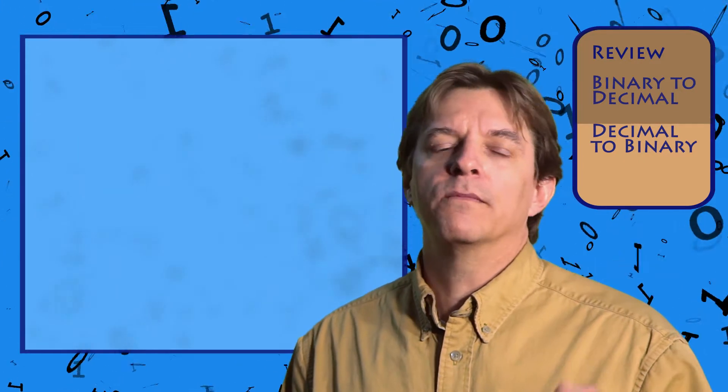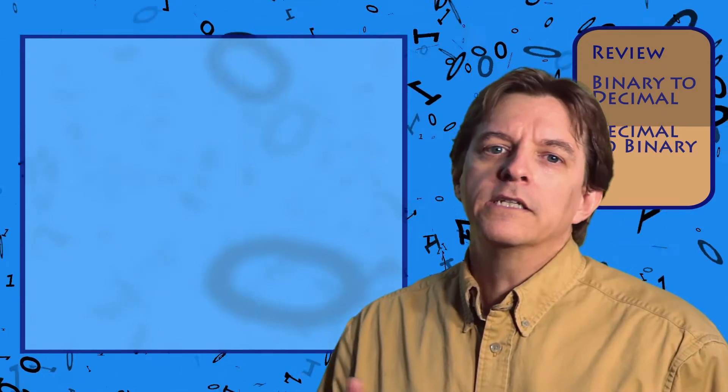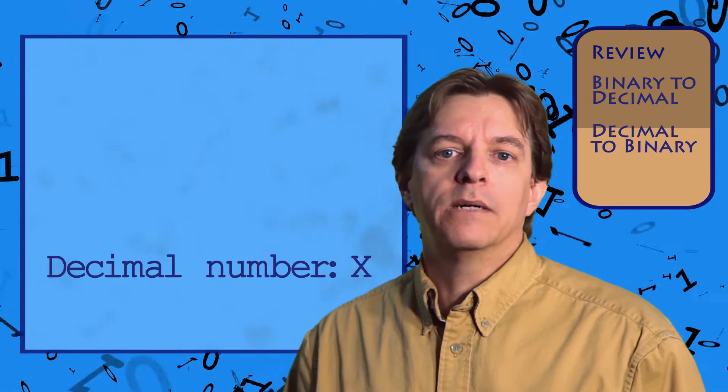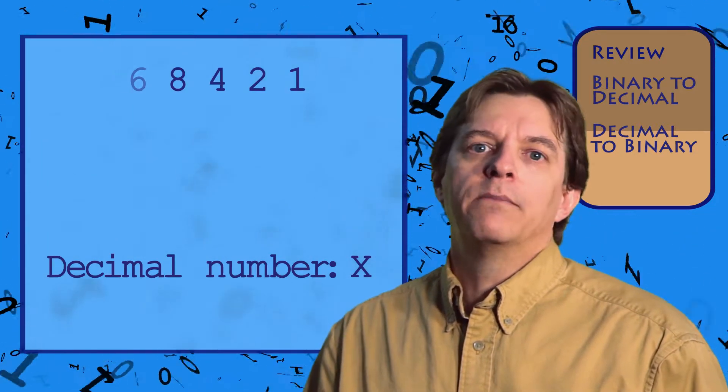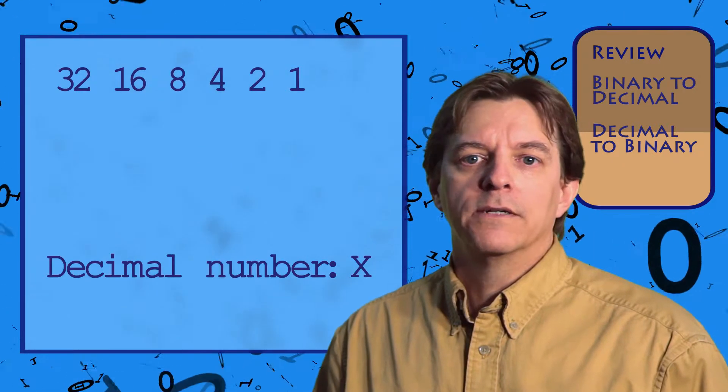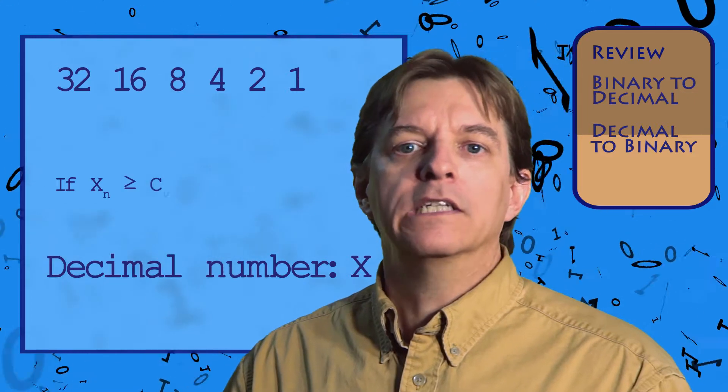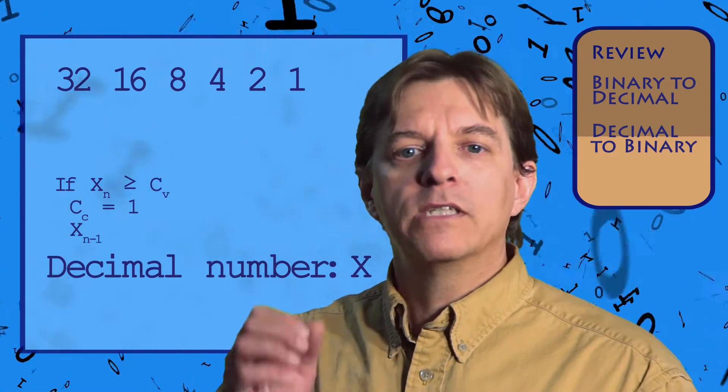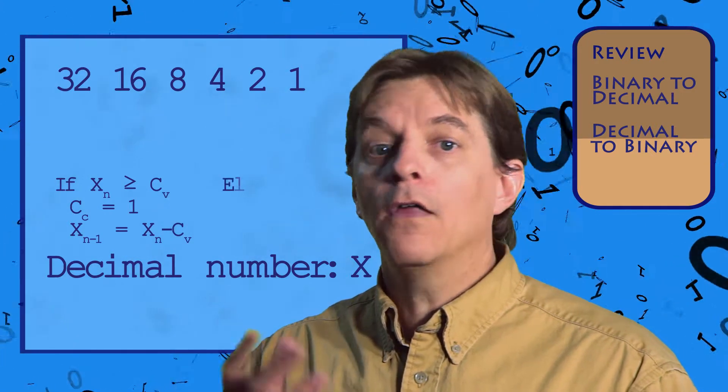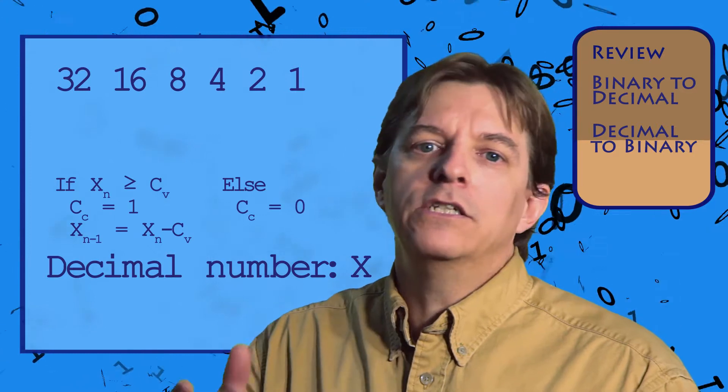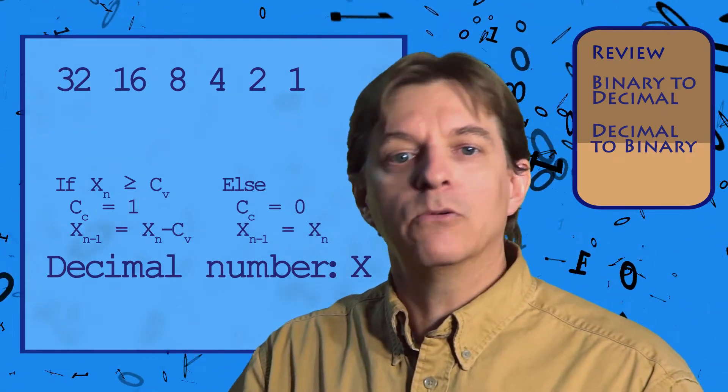Next, let's convert from decimal to binary. This is slightly more complicated, but still not hard. We need to start with a binary column value larger than our decimal number. So, we start at the right side with 1 and multiply by 2 until we have a number larger than what we want to convert. Then working from the left, we apply this rule. If the value we want to convert is greater than or equal to the column value, then we set a 1 for that column and subtract the column's value. Otherwise, we set a 0 for that column and continue. Result is then applied to the next column, and we apply the rule until we reach 0.